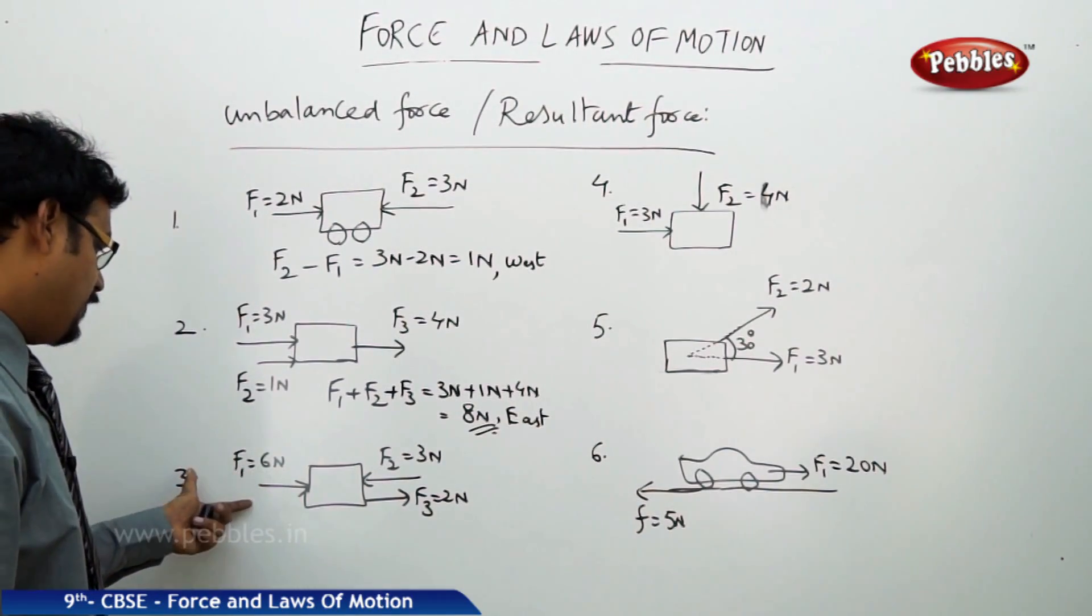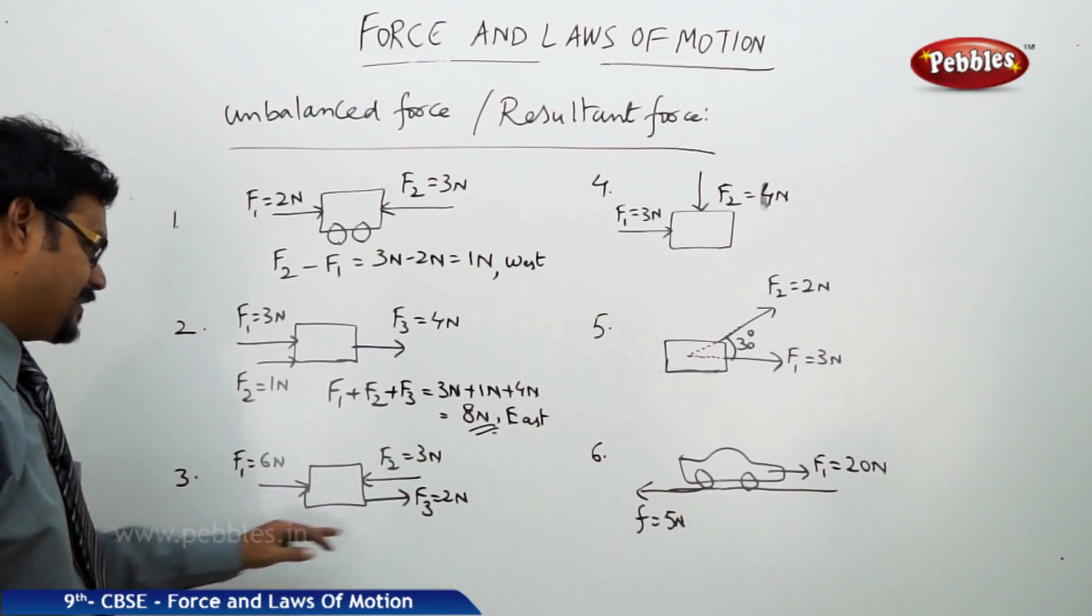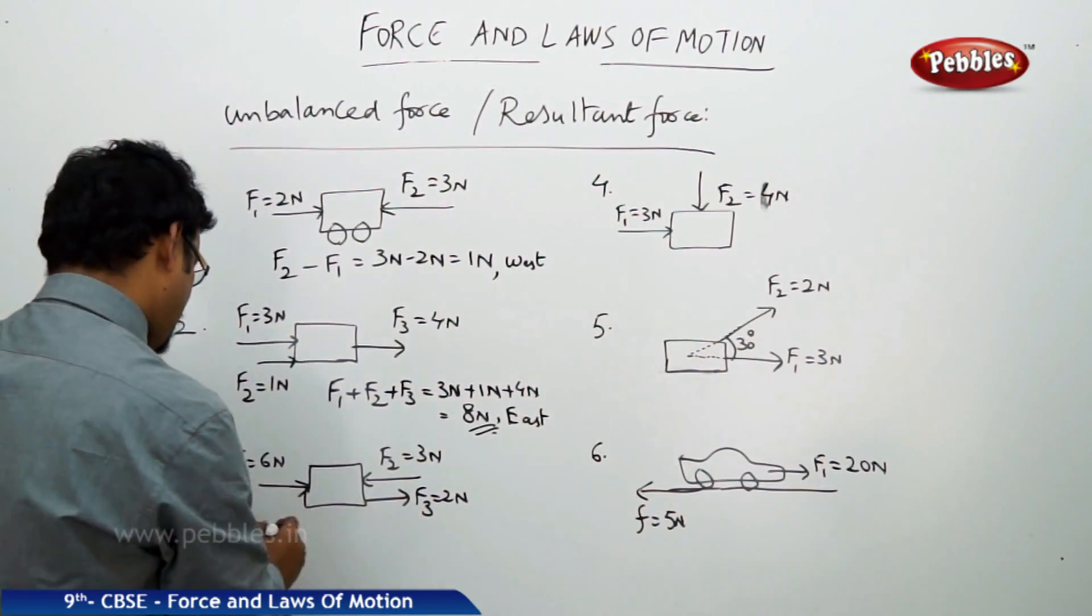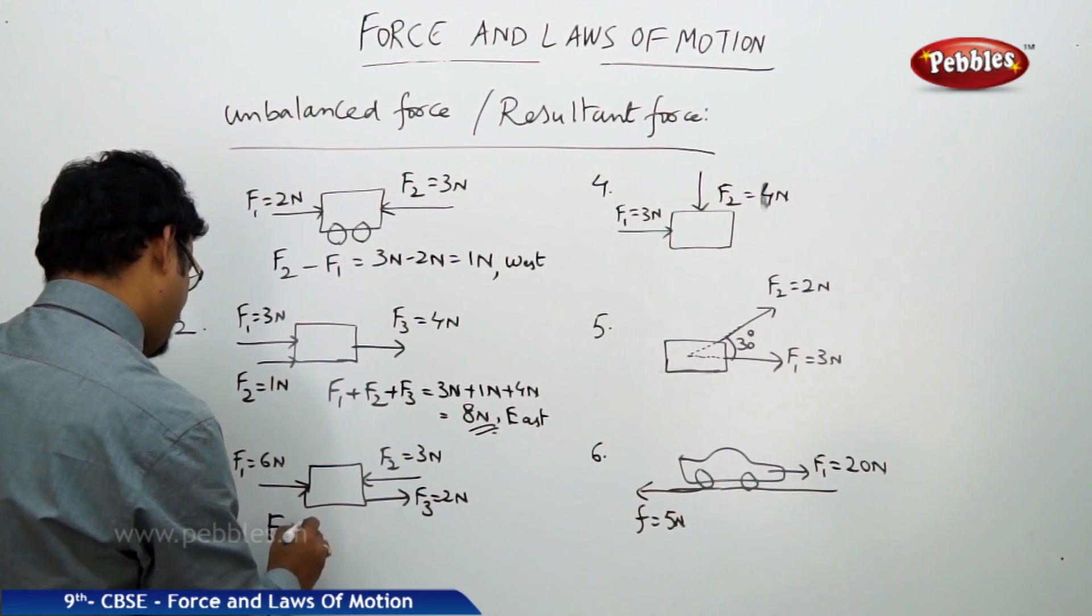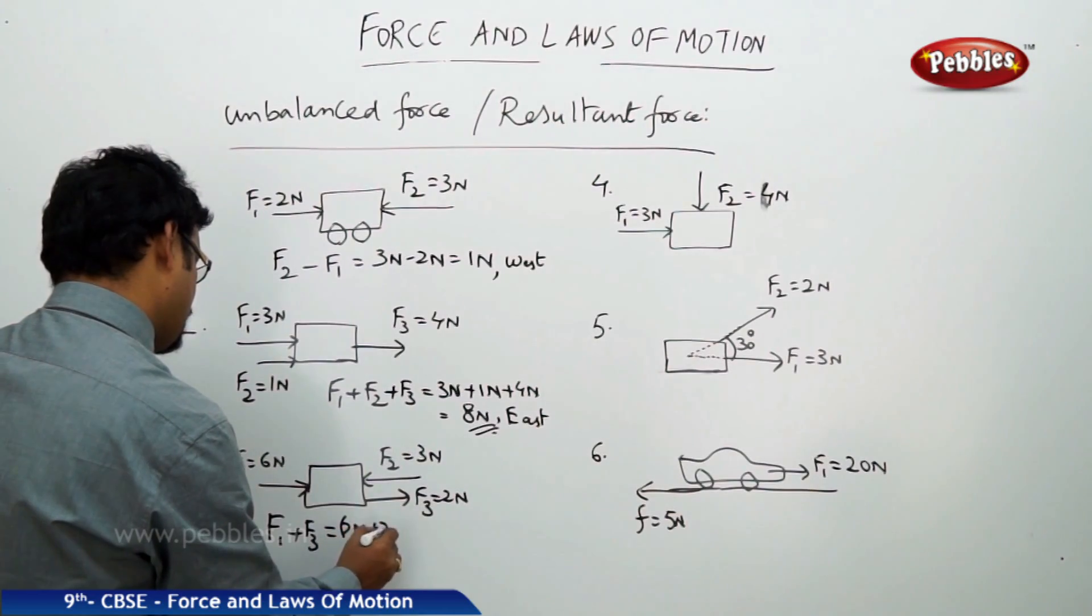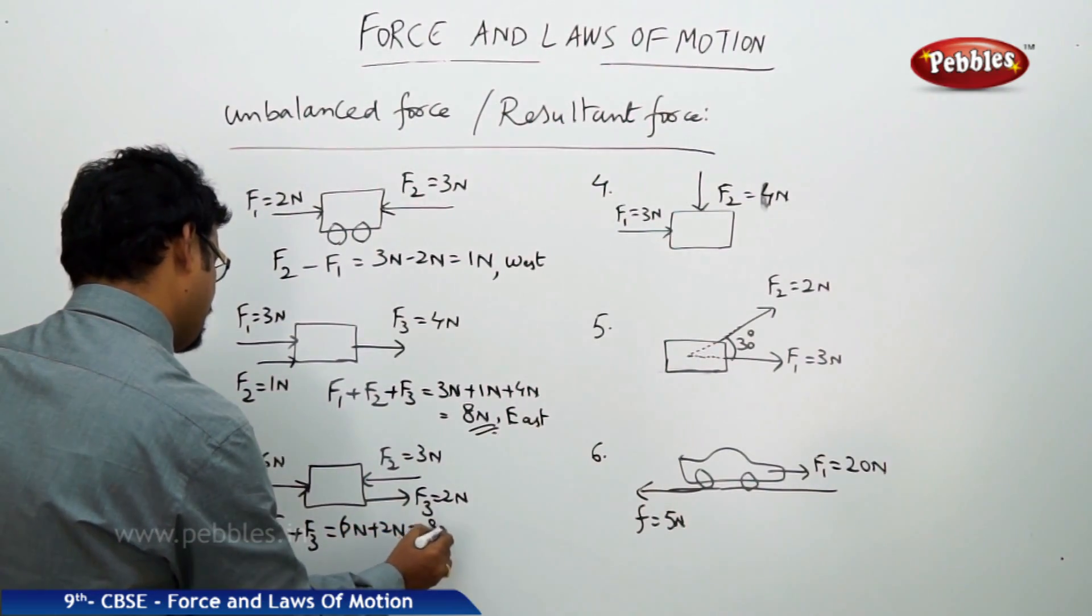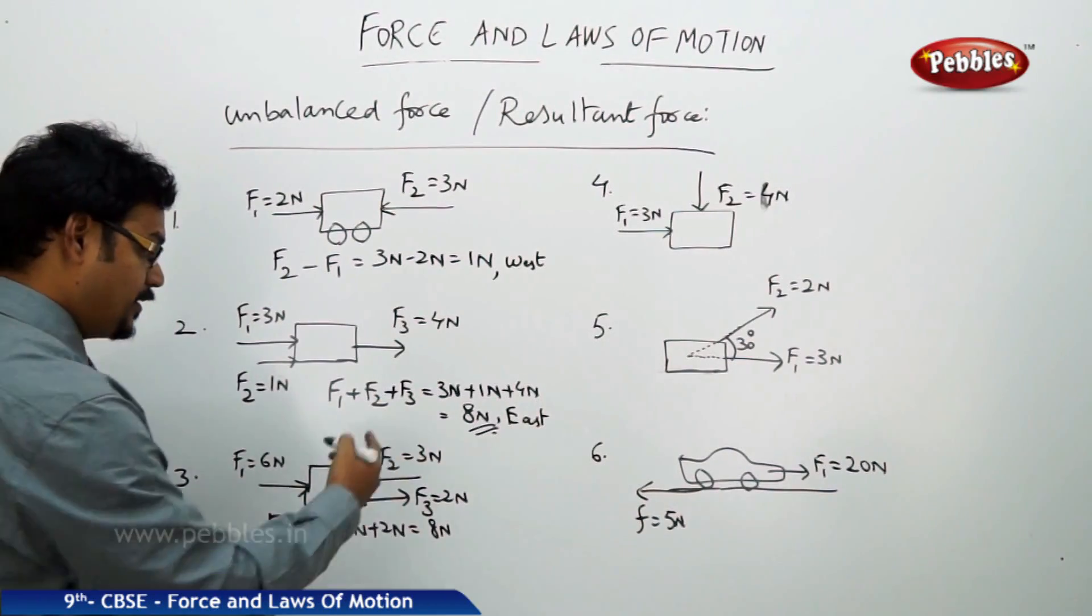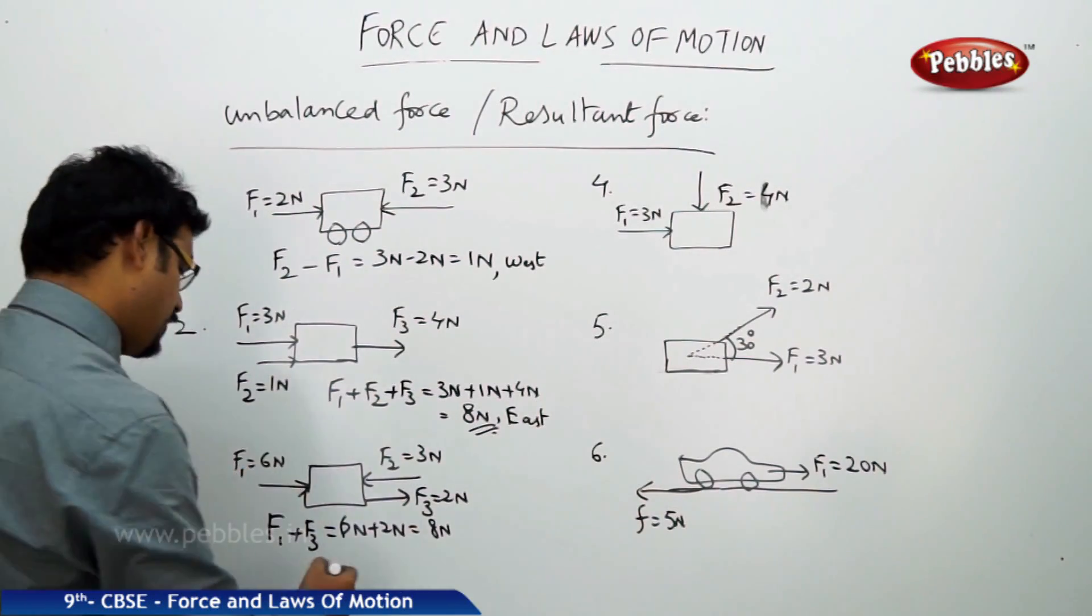Now third one. F1 and F3 are in the same direction but F2 is in the opposite direction. So therefore you take F1 plus F3 total 6 newtons, plus 2 newtons which is 8 newtons towards east side, but 3 newtons left side. So therefore this is 8 newton minus 3 newtons, which is 5 newtons towards east.